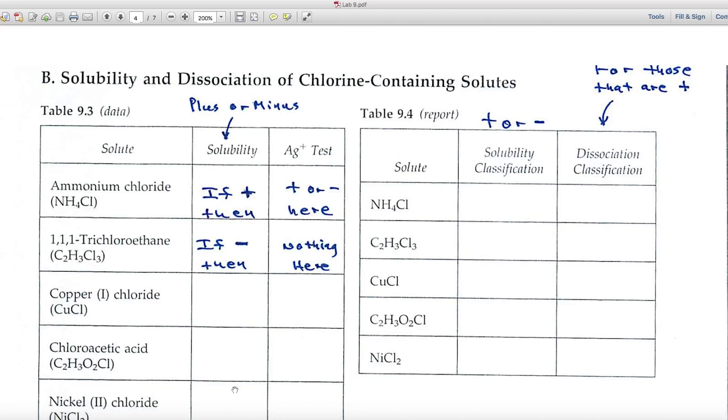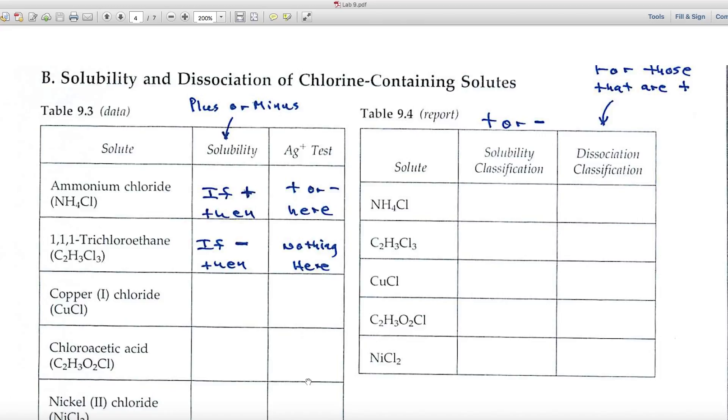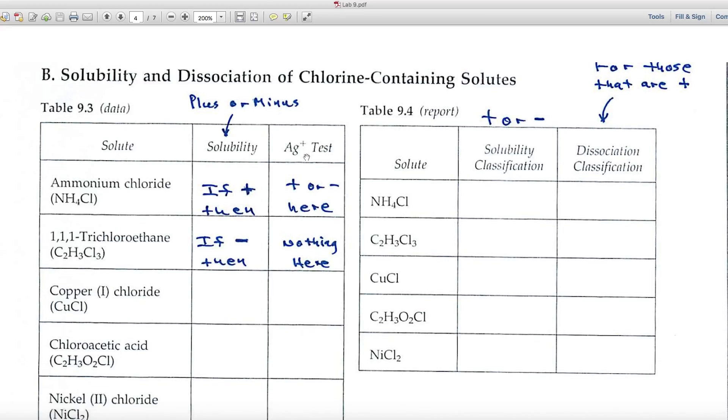And so each of these substances in this first column, you'll mark with a plus or minus. Then you'll test using silver ion for the presence of chloride. If something dissolves and produces chloride ion, it'll react with silver, and you'll get a white precipitate. And if you see that white precipitate, mark it with a plus. So, here too, in this column, you'll use plus and minus. But there's one caveat, and that is if you have a minus on this side, then you won't test for the silver ion. In other words, it's got to dissolve before you have any chance of testing with the silver ion.